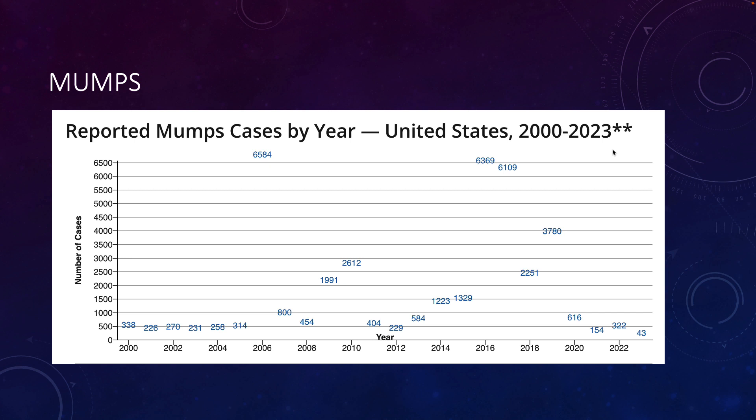Meningoencephalitis is very rare, and orchitis with permanent sterility is also rare. So it's a little bit less concerning to see higher numbers of mumps. Some of these cases are indicative of a lack of vaccination, but some are just indicative of the fact that the vaccine isn't as effective as some others.